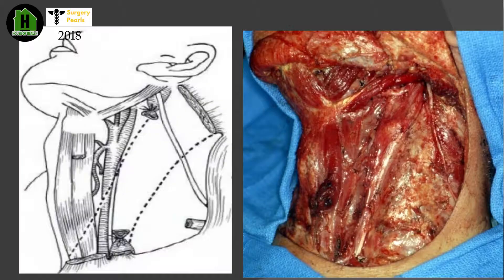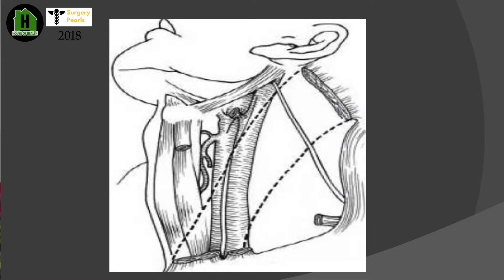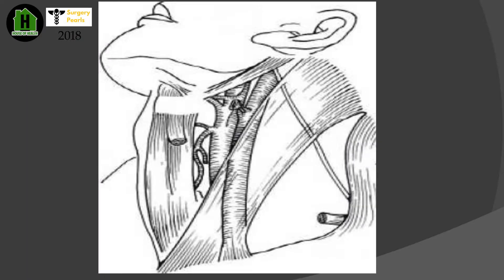To summarize: type 1 modified radical preserves the spinal accessory nerve; type 2 preserves the spinal accessory nerve and internal jugular vein; type 3 also preserves the sternocleidomastoid muscle.